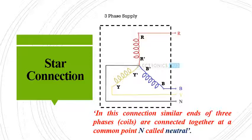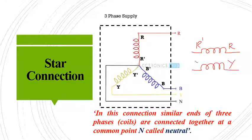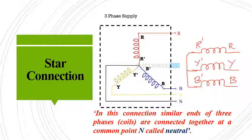One more structure for the star connection can be drawn like this. This is the coil of the first phase, denoted as R'R'. Then the coil of the second phase, denoted as Y'Y'. Then the third phase, that is B'B'. The similar ends are connected together — R'R', Y'Y', and B'B' — and this common point is taken outside and denoted as neutral. So both representations are the same connection-wise but the representation is a bit different.